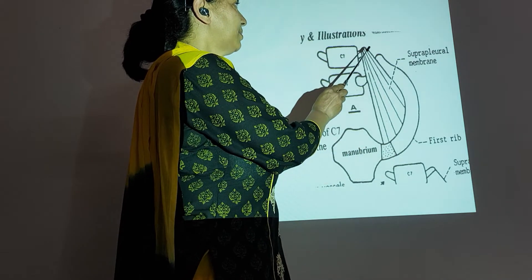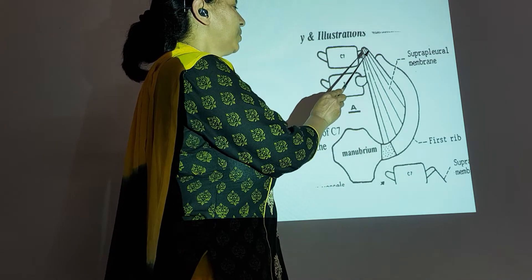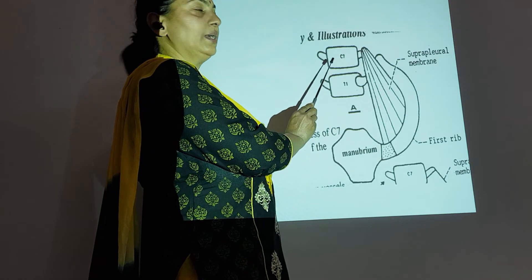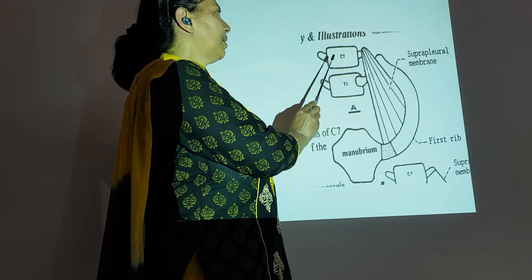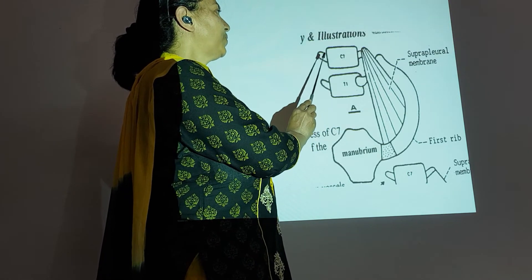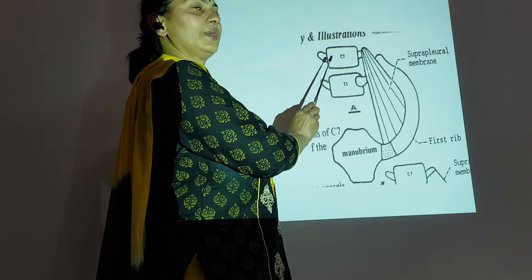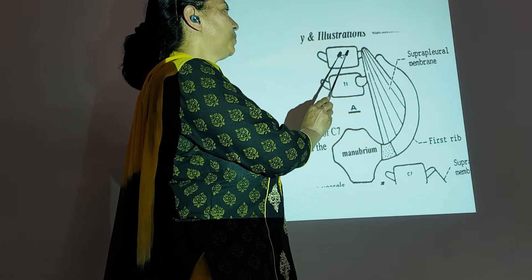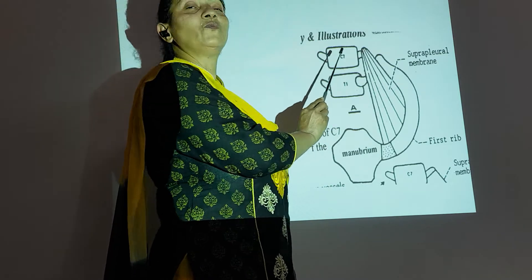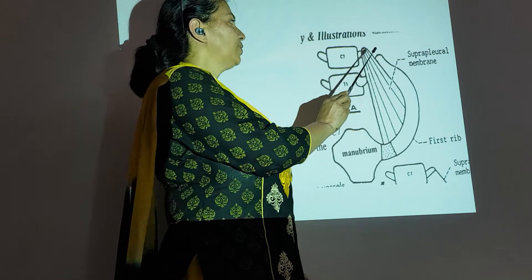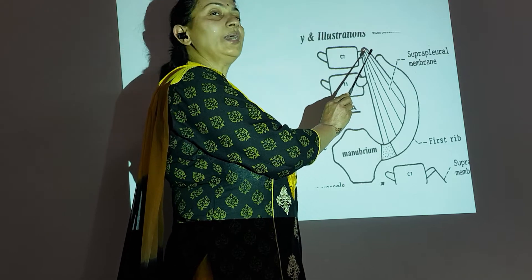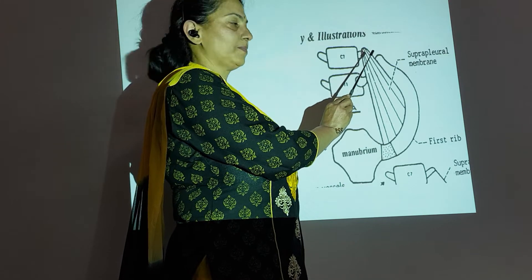The apex, you can see very clearly — you can see here on the other side as well. These are the transverse processes of the C7 vertebrae, and at the tip of it is the apex.